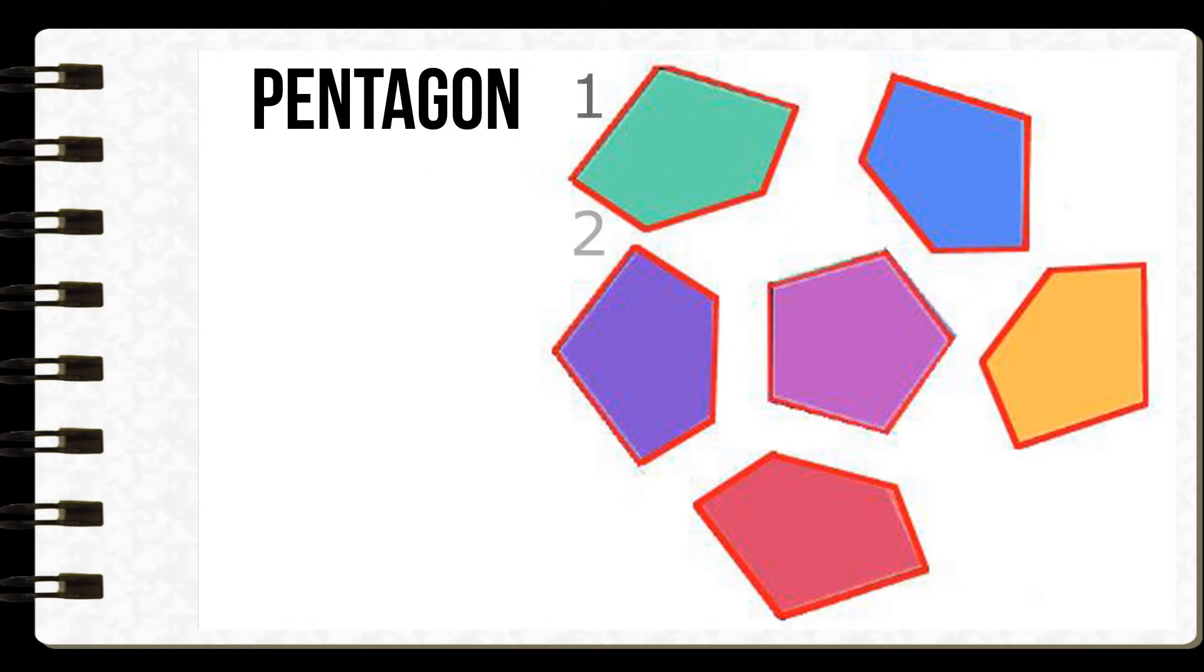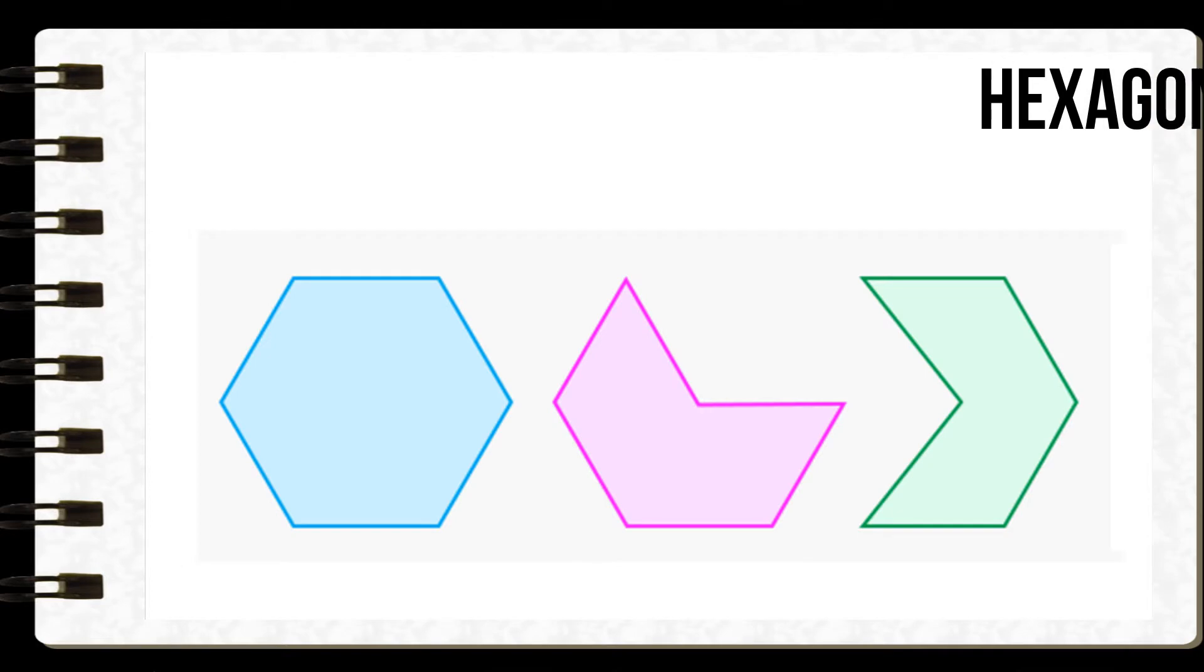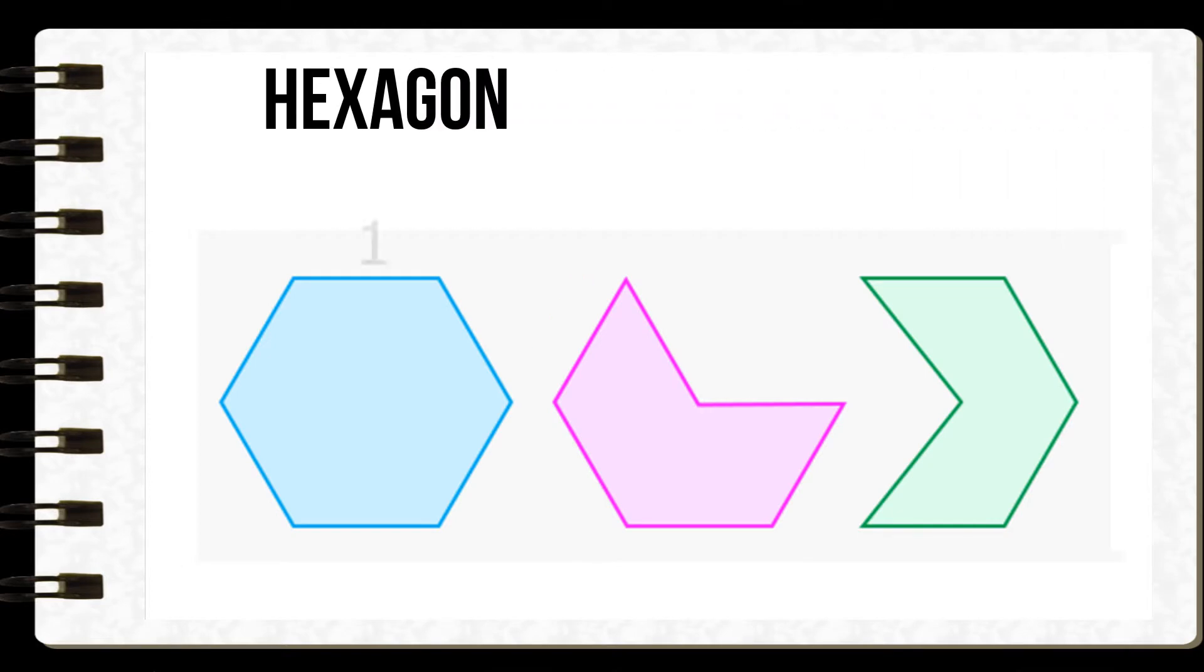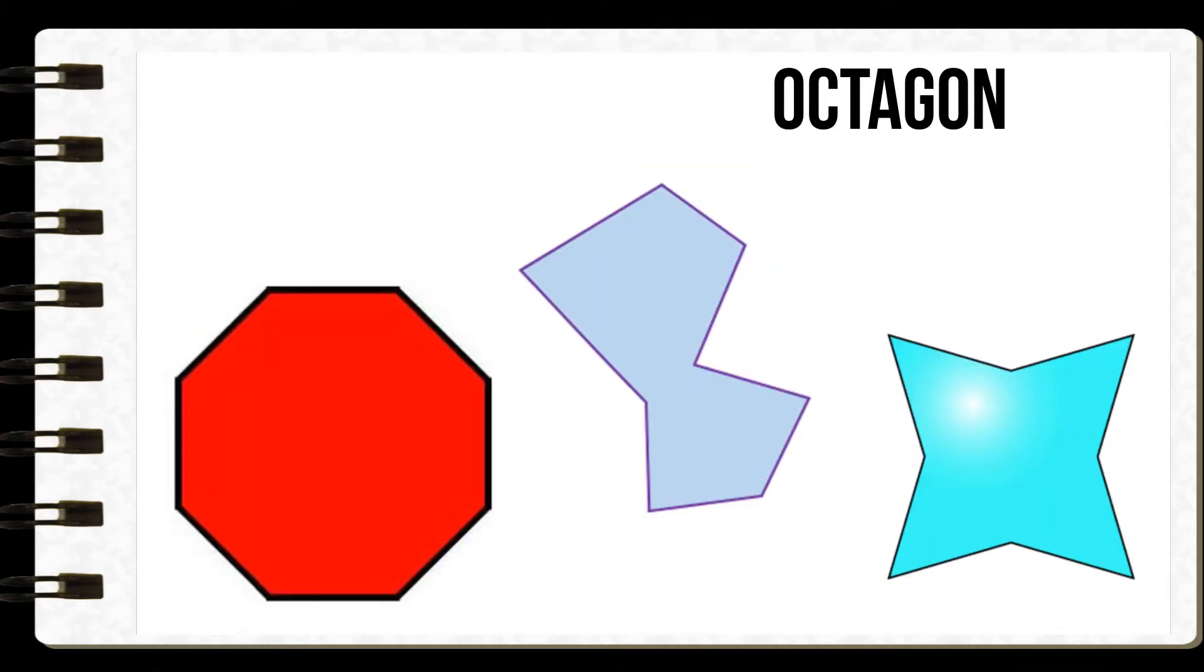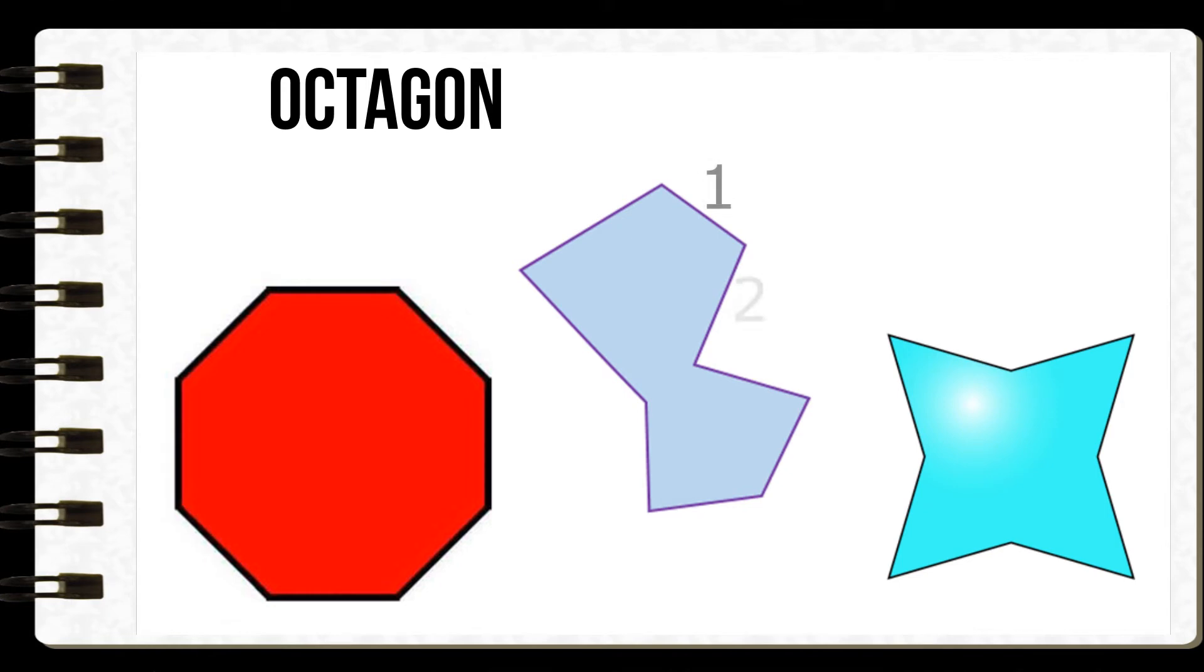Pentagon, a polygon with five sides. Hexagon, a polygon with six sides. Heptagon, a polygon with seven sides. Octagon, a polygon with eight sides.